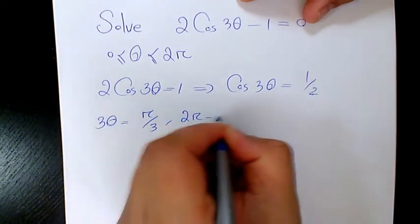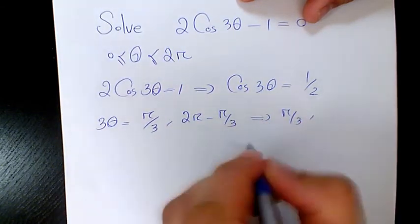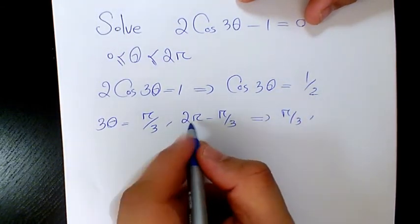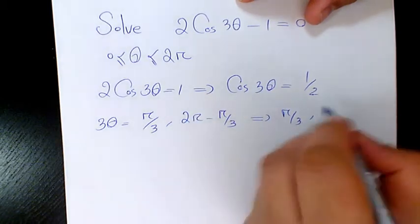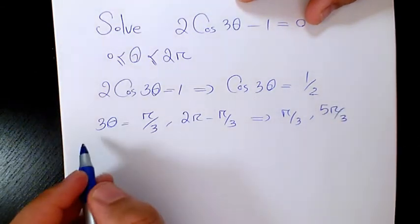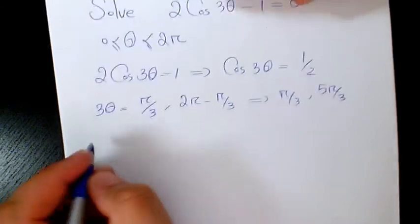or 2π minus π over 3, which is going to be π over 3. Then you have 2π is the same as 6π over 3, so it's going to be 5π over 3. That's for basically 3 theta, so it's going to be